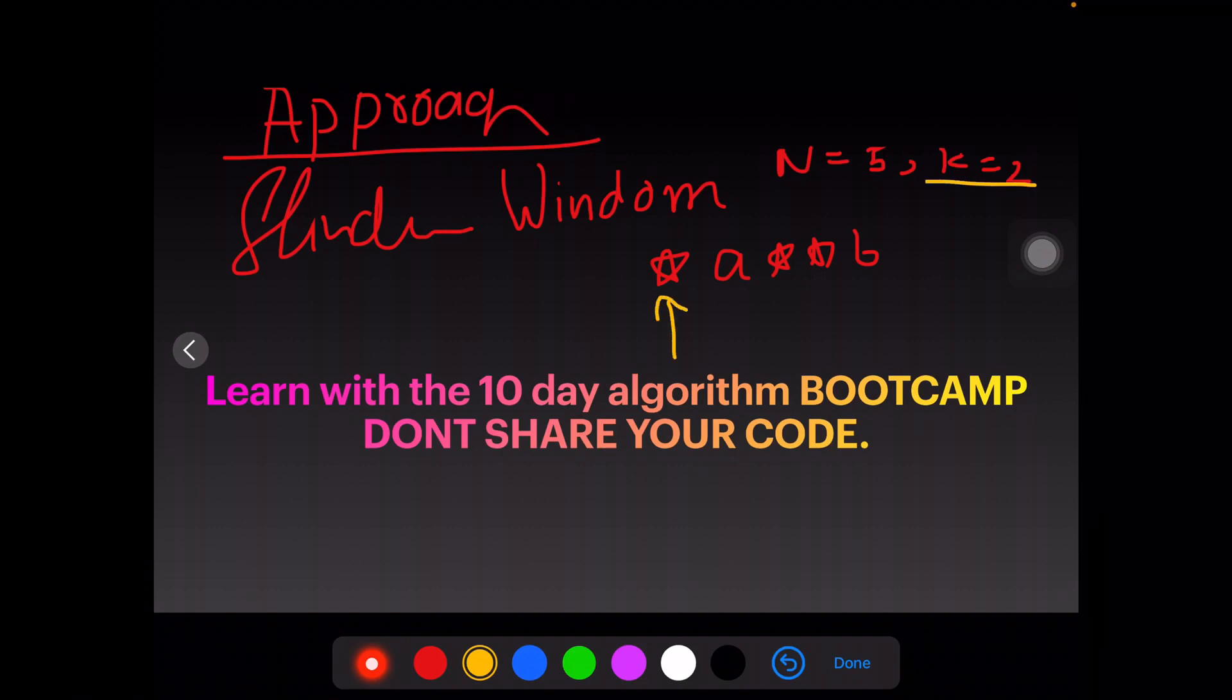Suppose my first pointer is at the initial 0th element and I take a window of size 2, so 1 and 2. This is the size of my window. In this particular window I'll try and check whether there are two stars or not.